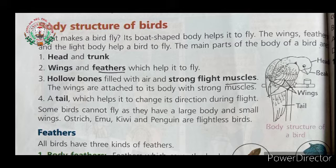Some birds are called flightless birds. They are called flightless birds because they cannot fly — they have a large, very heavy body and small wings. Some birds like ostrich, emu, kiwi, and penguin are called flightless birds as they cannot fly.